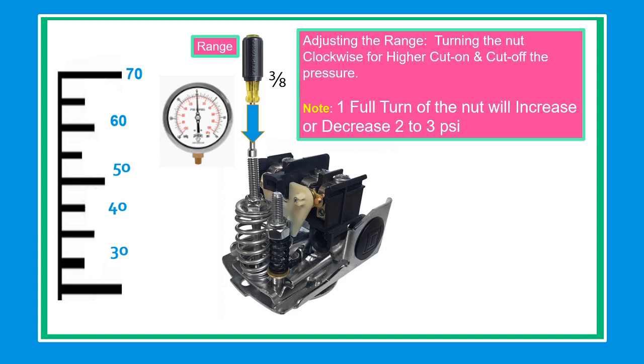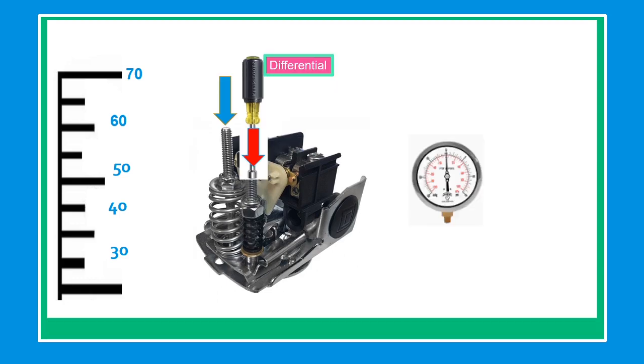The differential pressure adjustment is for cut out only. If you wanted your pressure to be 40 to 65 psi instead of 40 to 60, you could tighten the nut and that would adjust the cut out only.